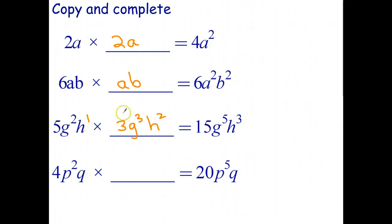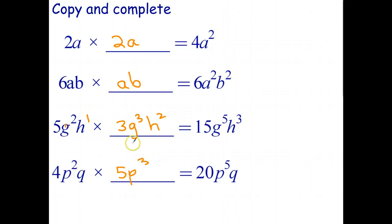The last one: 4 times what gives 20? Answer is 5. p² times something gives p⁵ — that's p³. And a factor of q times what gives q? That's just 1, so the answer is 5p³. Check: 4×5=20, p²×p³=p⁵ by adding powers, and q×1=q.